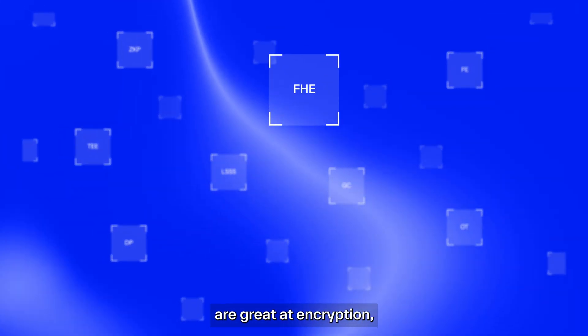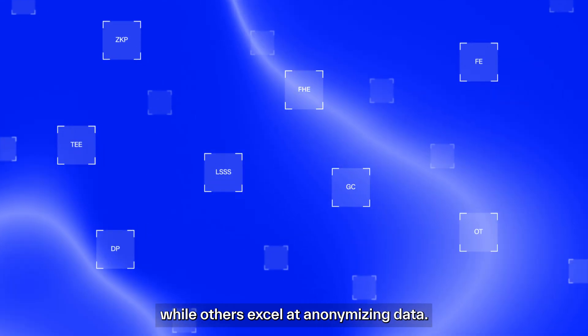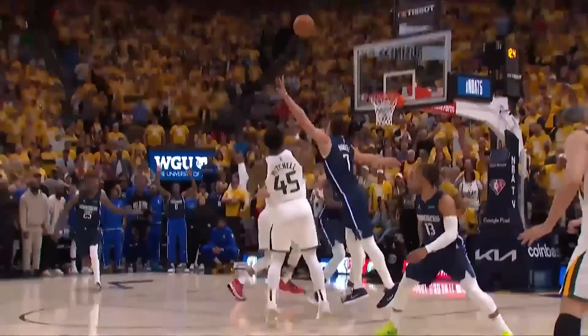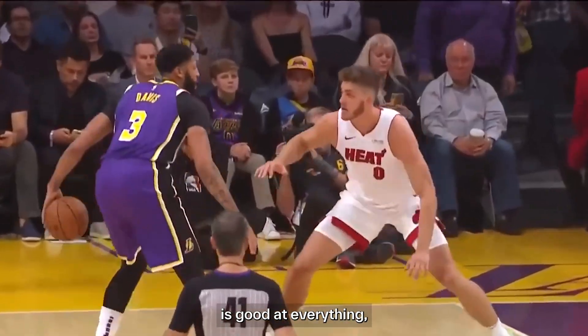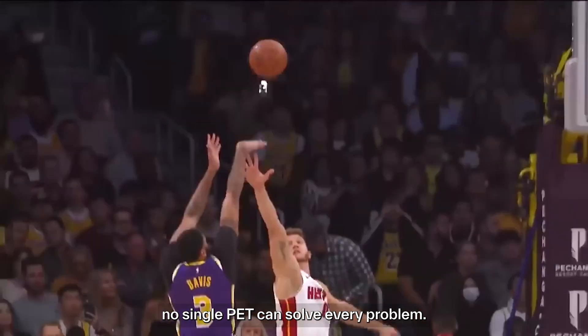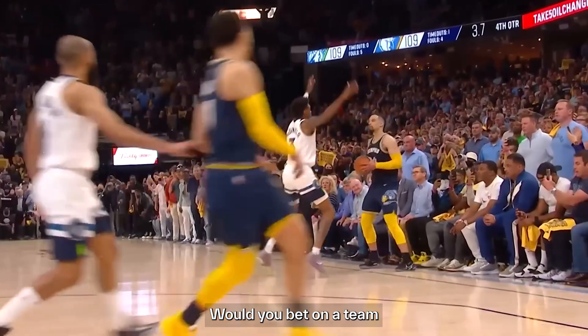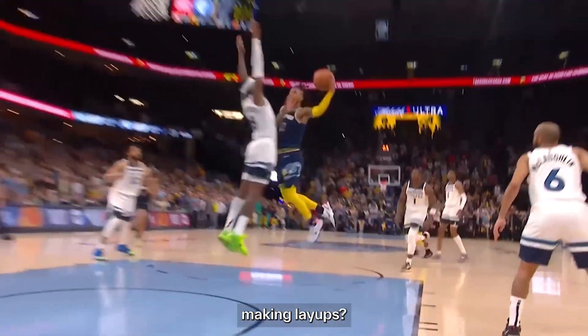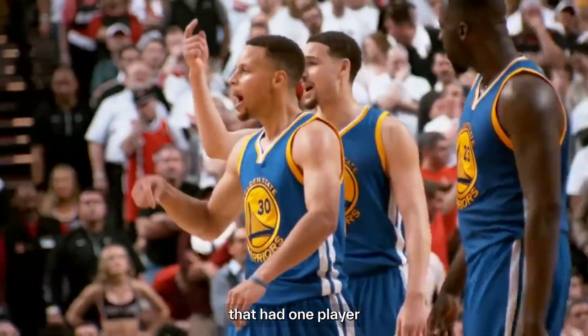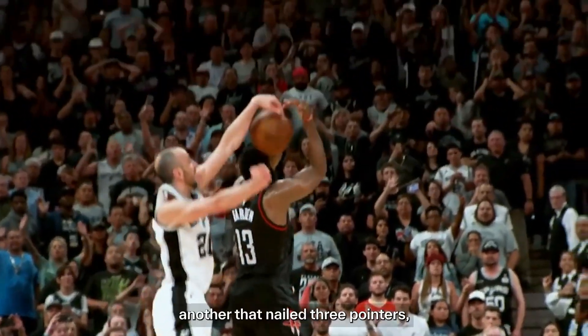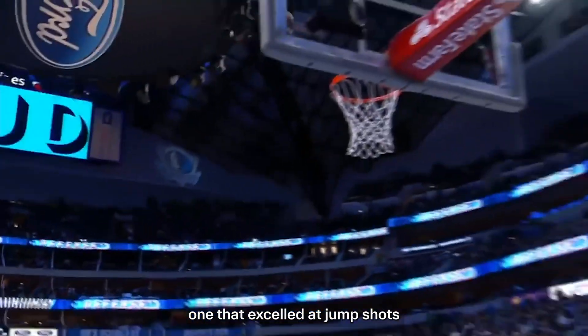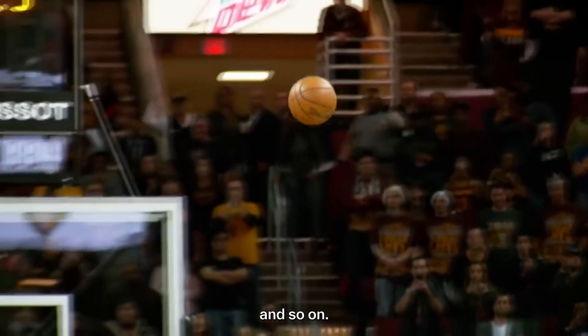Each PET has its own strengths and weaknesses. Some technologies are great at encryption, while others excel at anonymizing data. Think of it like a basketball team. Just as no single player is good at everything, no single PET can solve every problem. Would you bet on a team if every player had just one strength, making layups? Of course not. They would lose to another team that had one player that was good at defense, another that nailed three pointers, one that excelled at jump shots, and so on.